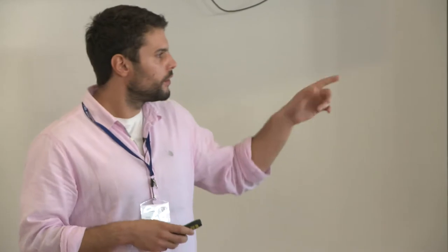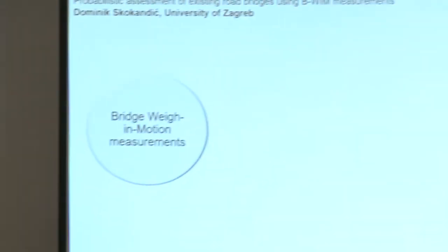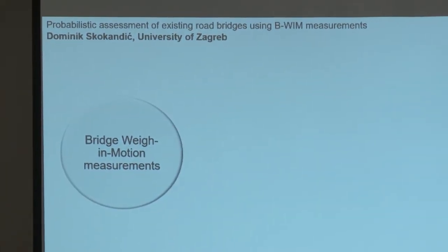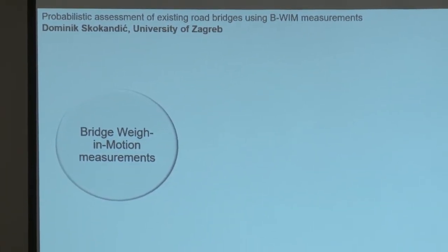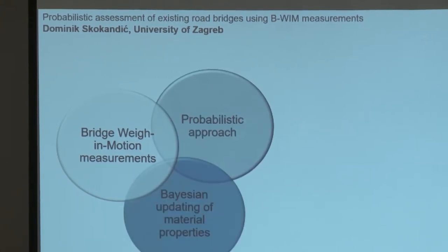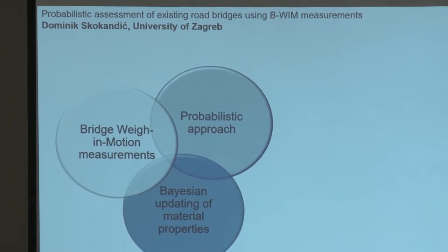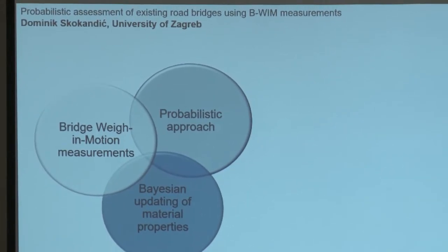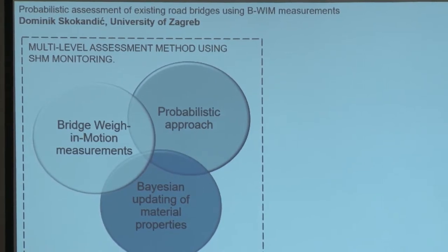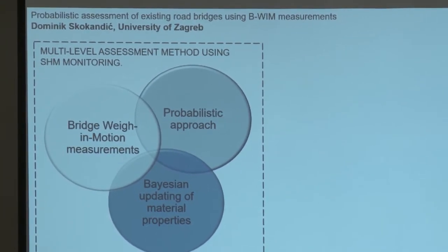The idea was to define an assessment method which uses SHM and a probabilistic approach. We started with bridge weigh-in-motion measurements as the chosen SHM tool — a tool which measures vehicles as they drive over the bridge. You get not only traffic data, but also the structural response of the bridge, which is very important. We combined that with a probabilistic approach and Bayesian updating of material properties, and defined a multi-level assessment method using SHM.